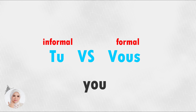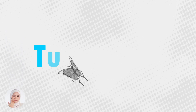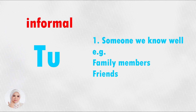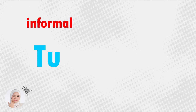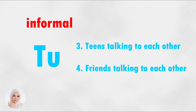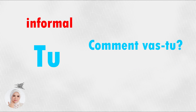You may ask what is informal and what is a formal situation. We use tu when we are speaking to someone that we know well — it can be a family member, a friend, a close relation. It is also used when an adult is speaking to a child or a teenager. Children and teenagers also use tu when speaking to one another. So when speaking to a friend, you would use 'Comment vas-tu?' which means 'How are you?'